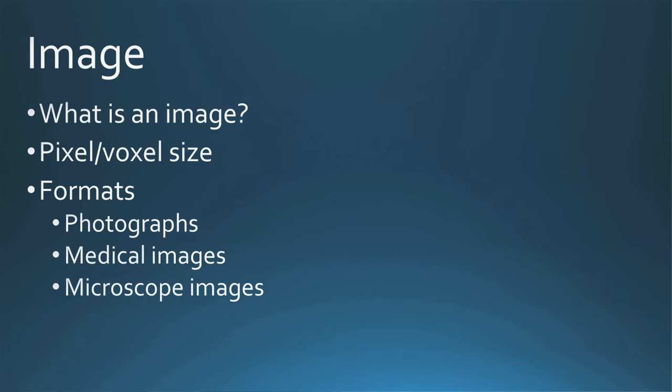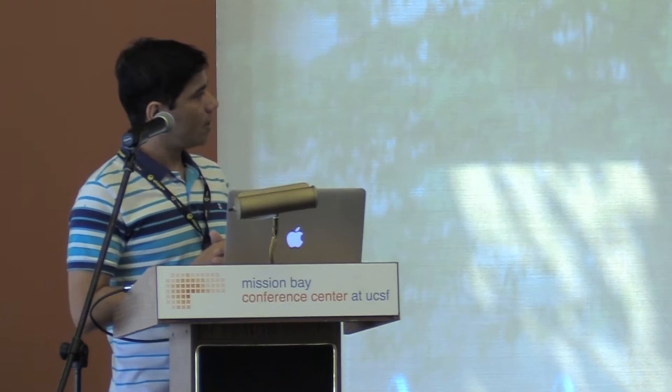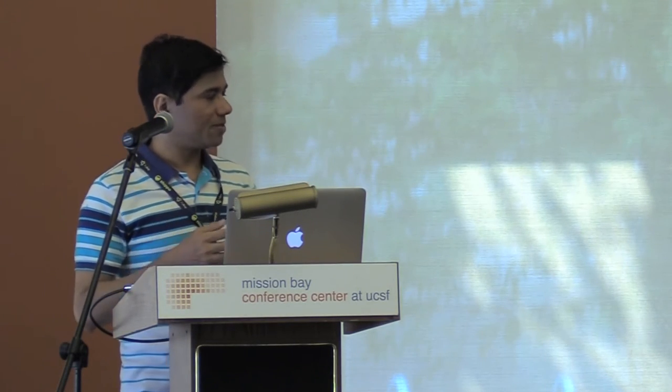What is an image? For this talk, let's focus on two-dimensional images. A 2D image is basically a 2D matrix containing X and Y pixels. Pixel values could be any range — a JPEG or PNG image has pixel depth from 0 to 256, while medical images have higher pixel depth for more information. For example, a CT image is typically 12-bit, so pixel values go from 0 to 4096 or higher. Images come in different formats: photographs, medical images, microscope images, and many others.